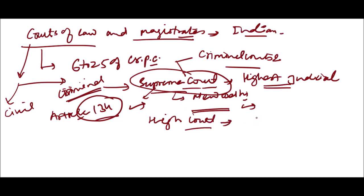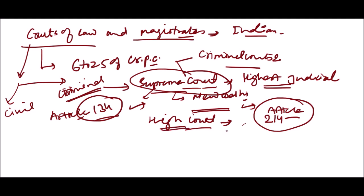Next we have the High Court, which is usually located in the capital of every state and is the highest tribunal for the state. It comes under Article 214 of the Constitution of India. The High Court may try any offense or pass any sentence authorized by law.